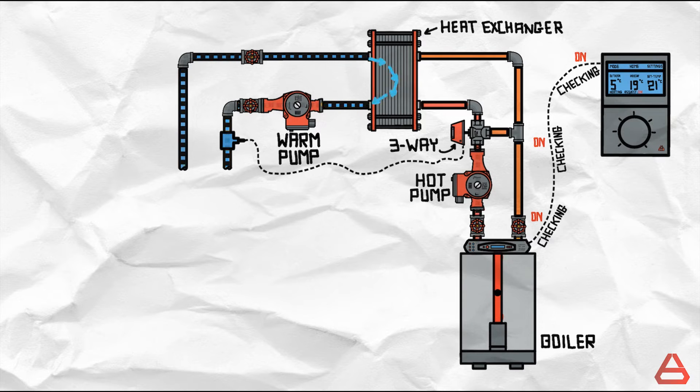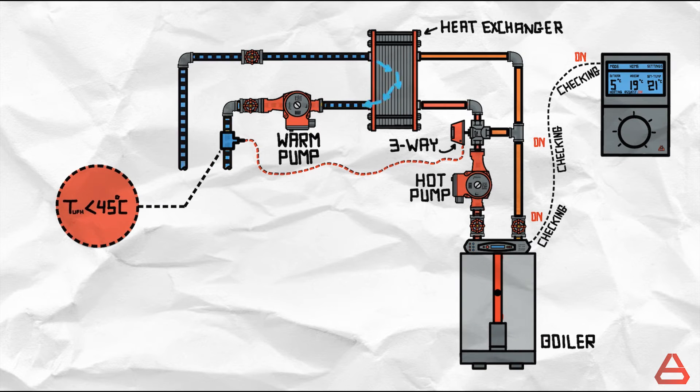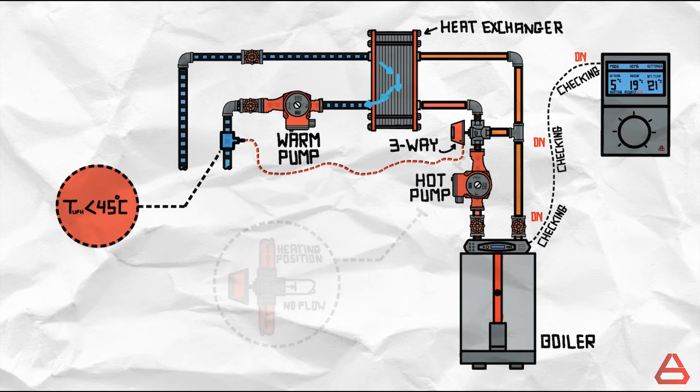The sensor of the three way valve measures the temperature of the water flowing in the warm circuit. It finds that the temperature is below the heating temperature which we had considered to be 45 degrees Celsius. The three way valve will assume a heating position and allow high temperature water from the boiler to enter the heat exchanger and provide heat to the warm circuit.